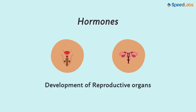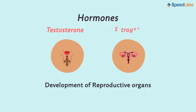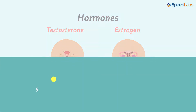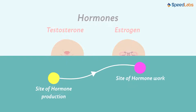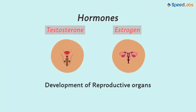Yes, the primary function of testosterone and estrogen is to develop the reproductive organs. But have you ever wondered how do these work? Because they are produced at one side of an organ, while the location of their work is some different organ. In this video, let us have a look at how these hormones work.